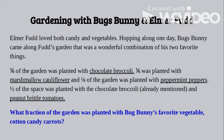The next step in problem solving is to find the hidden question. I know the question I'm trying to answer is what fraction of the garden was planted with Bugs Bunny's favorite vegetable, cotton candy carrots. That's the question that's directly asked.